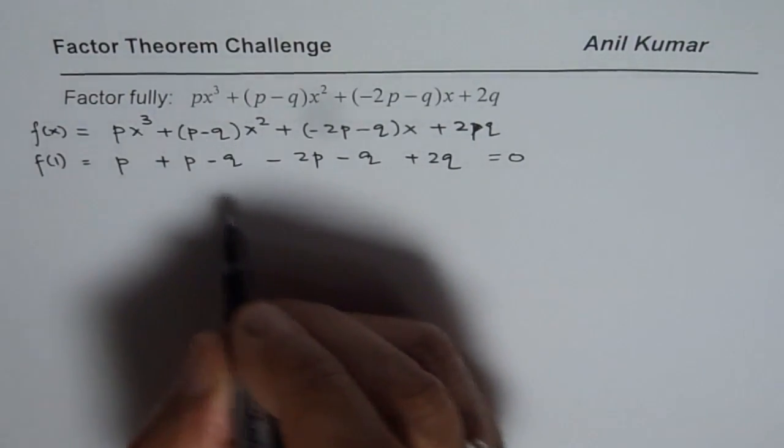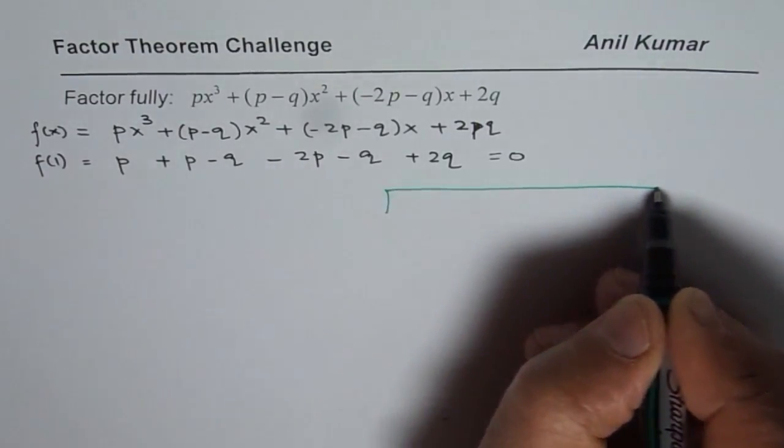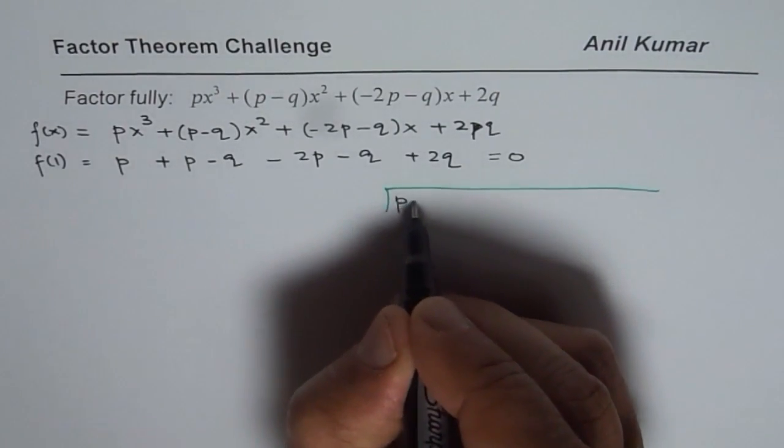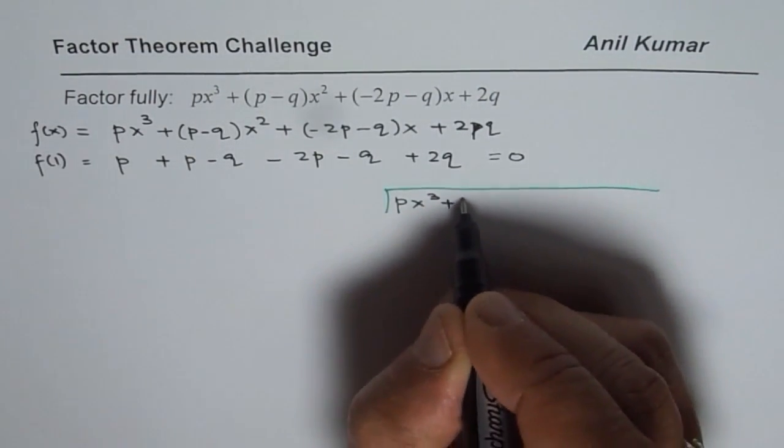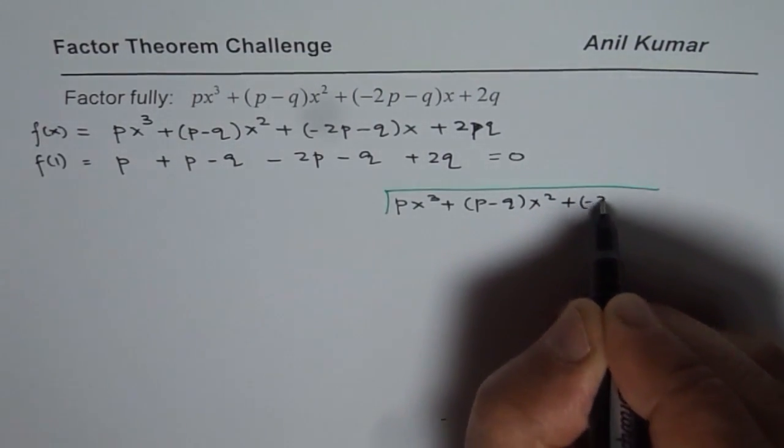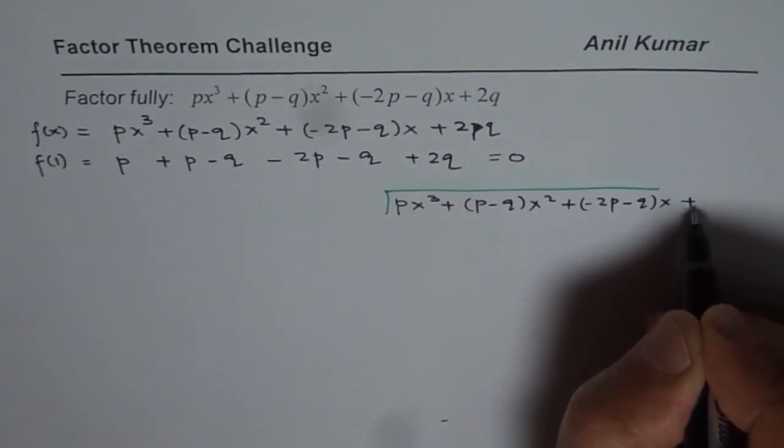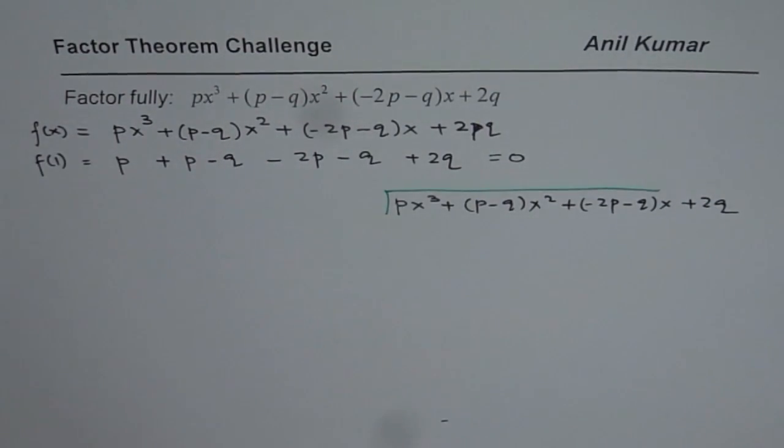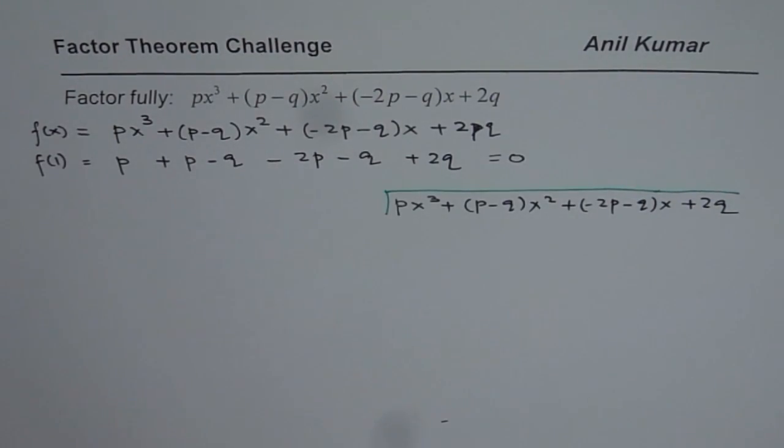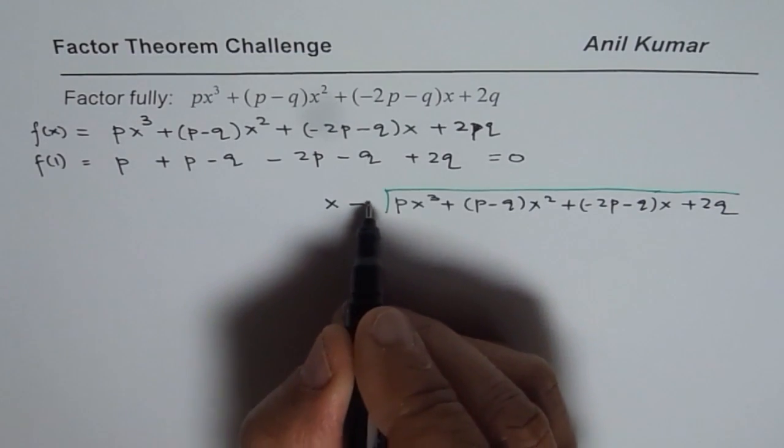So what we have here is px³ + (p-q)x² + (-2p-q)x + 2q. So we will divide this by the factor x-1, since f(1) is 0.